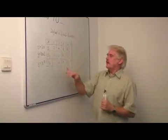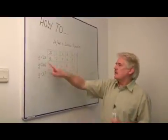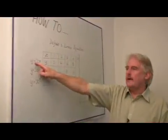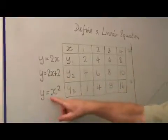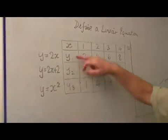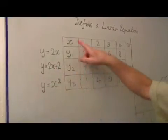Now, on the board already, I've drawn a table which indicates three different equations. The first, y equals 2x. The second, y equals 2x plus 2. The third, y equals x squared. Here are the y's, y1, y2, y3, representing those.